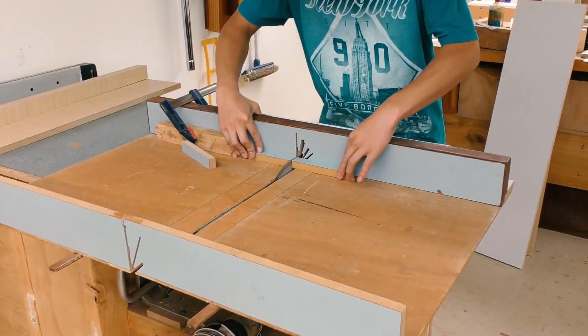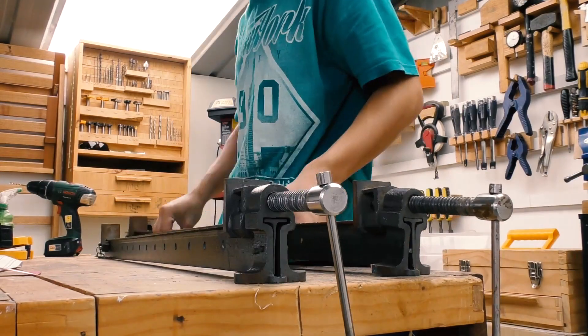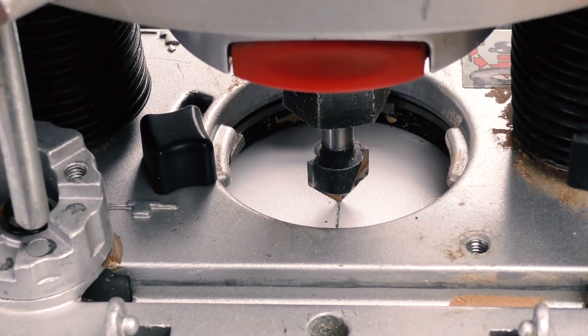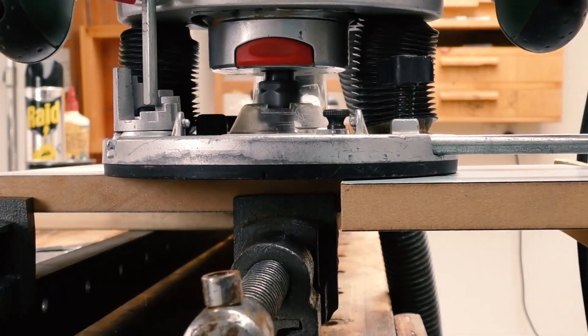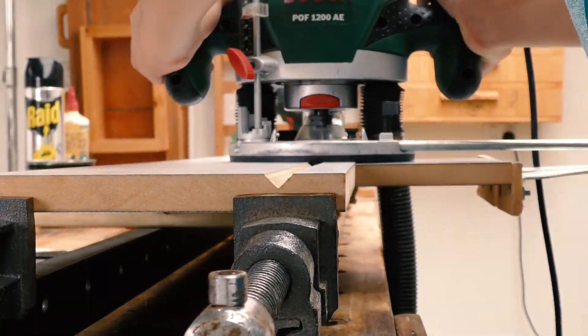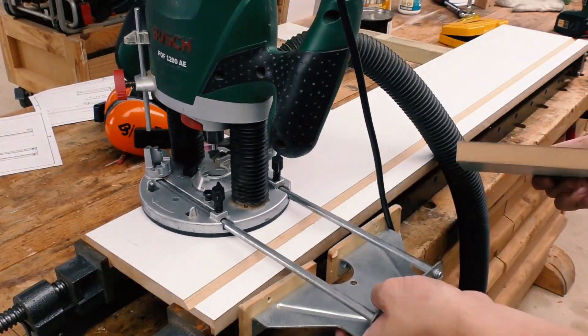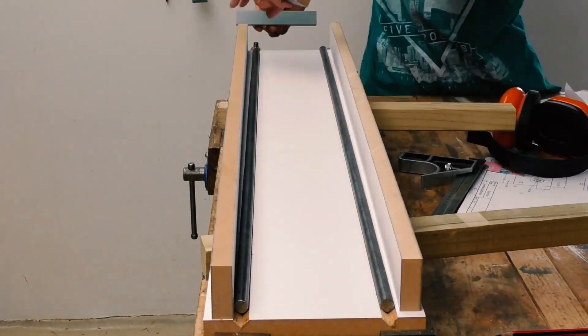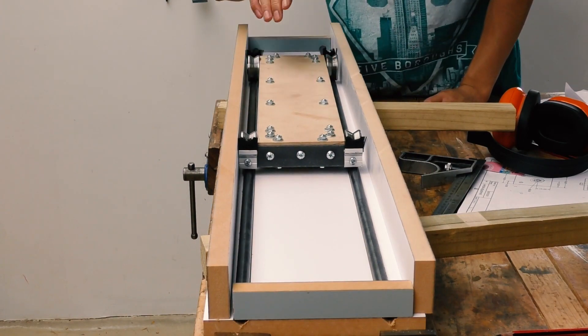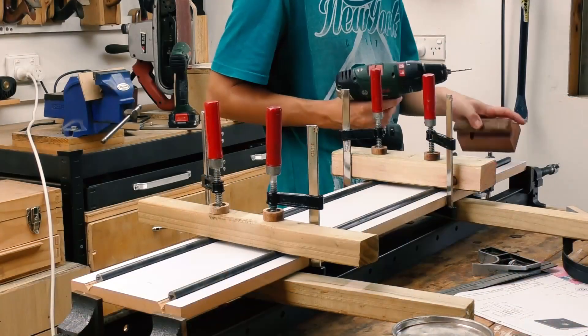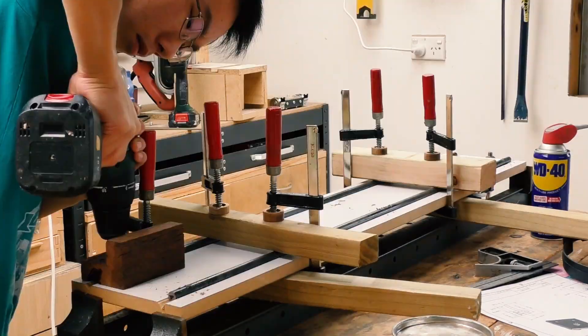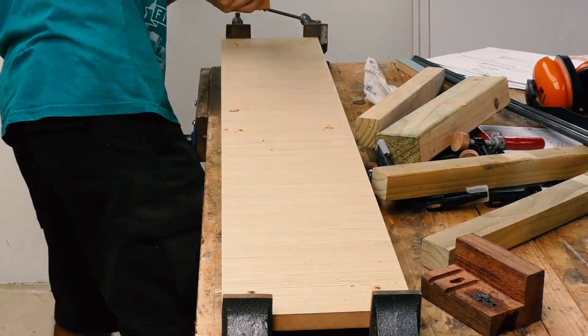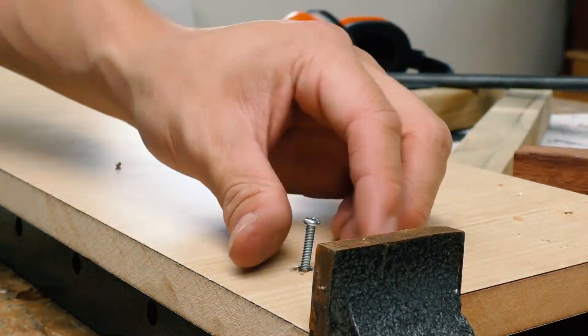Now the wooden parts. The top of the sliding table is basically a mirror image of what I did to the base in the last video. At least it fits! For a second I thought it wasn't going to fit.